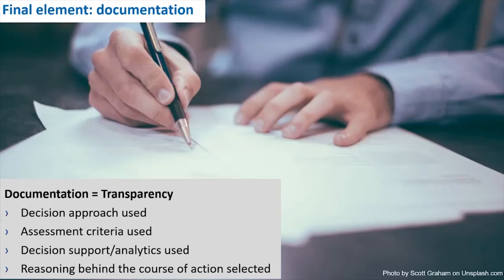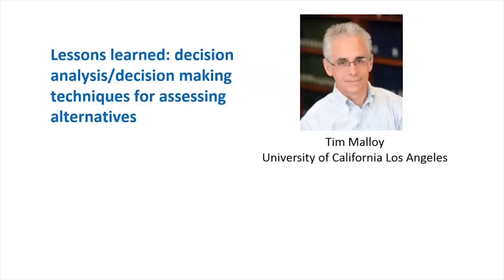This permits transparency — a core principle of assessing alternatives — and allows the parameters of the decision to be interpreted and understood by other parties. You need not make the same decision as some other entity conducting a similar assessment, but people need to be able to follow the rationale behind the decision reached. Now you're going to hear from my colleague Tim Molloy, a professor of law and faculty director of the UCLA Sustainable Technology and Policy Program. Tim is a leading expert on the use of various decision-making techniques in the context of alternatives assessment.